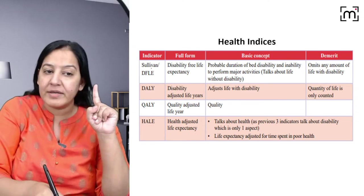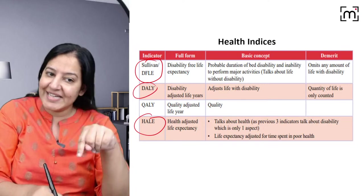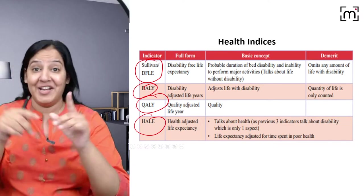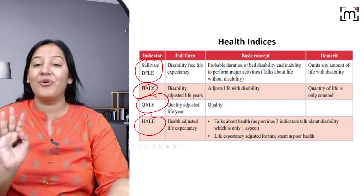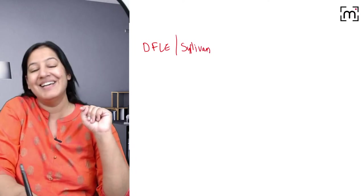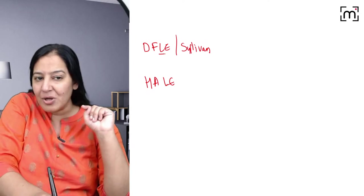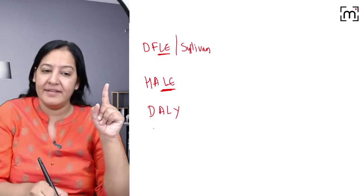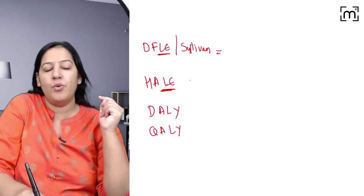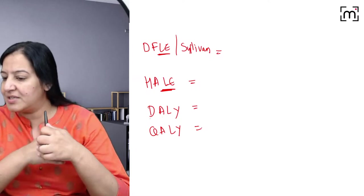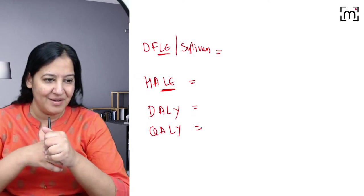To revise all four: DFLE or Sullivan Index — Disability Free Life Expectancy; HALE — Health Adjusted Life Expectancy; DALY — Disability Adjusted Life Years; QALY — Quality Adjusted Life Years. I'll now take one numerical example and you will tell me the answers for each. These are the four most confusing indices in PSM.